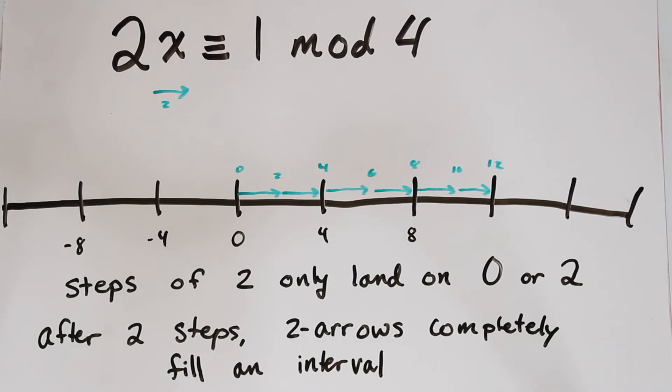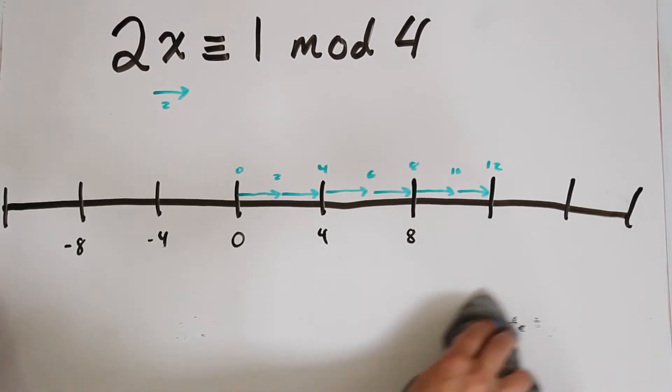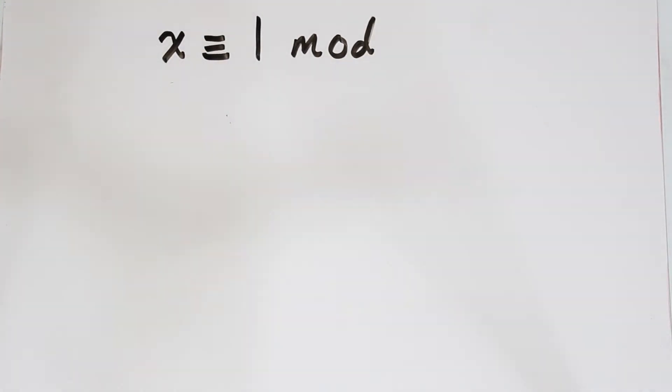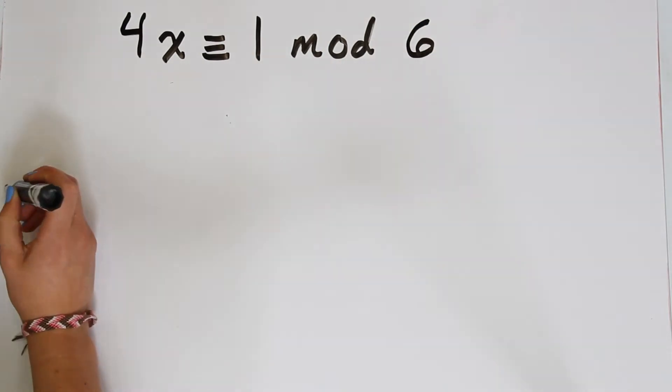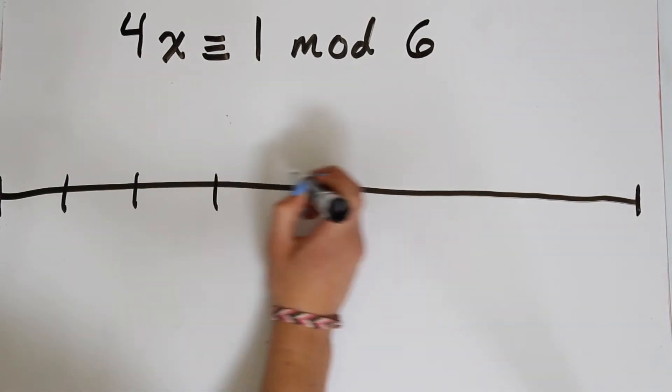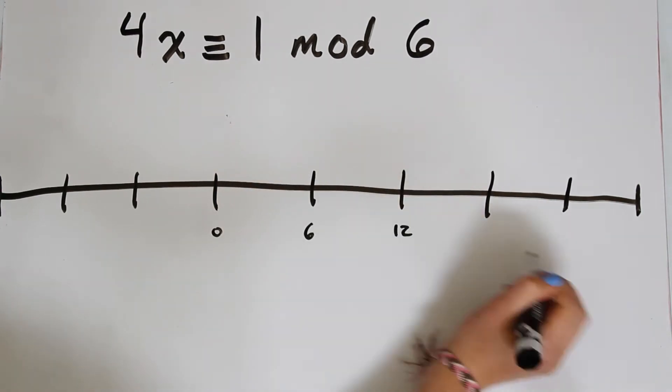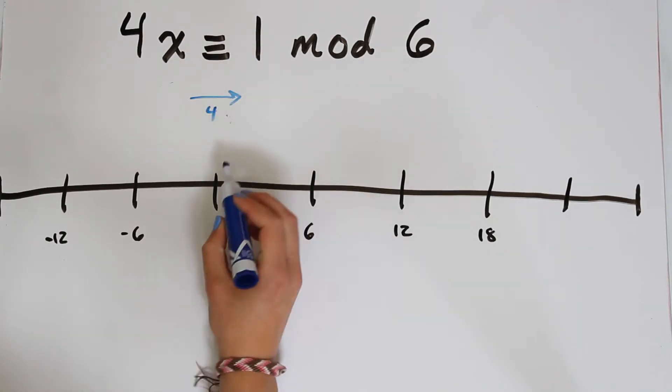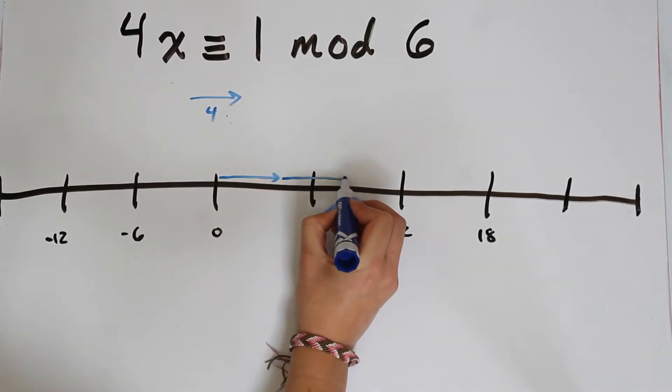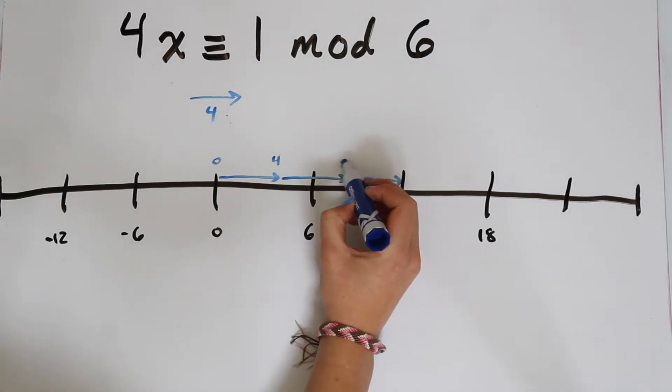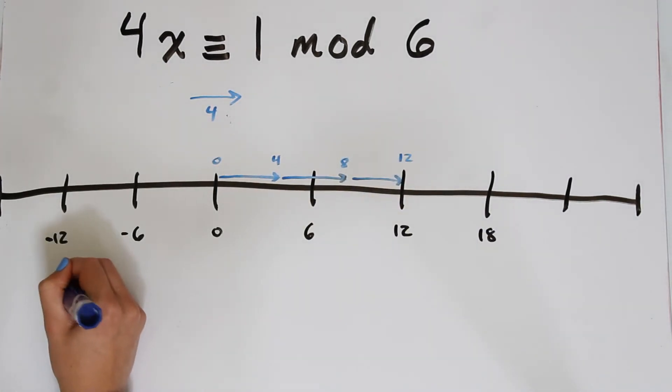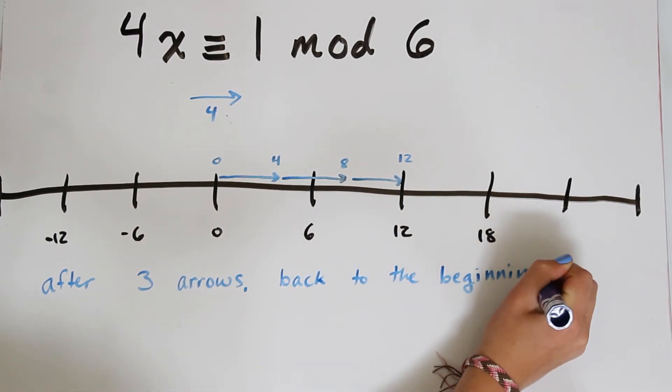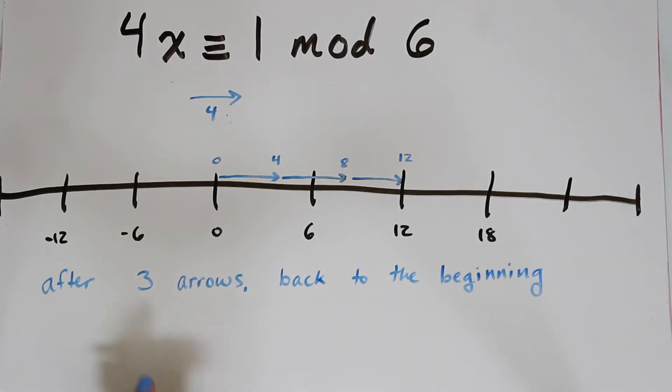Let's look at some more examples to understand why this is. So let's look at 4x is congruent to 1 mod 6. Here we have our number lines split into intervals of length 6. And then we have our 4 arrow. And we see by stacking these 4 arrows on top of each other that after 3 we've gone back to the beginning. So we've gone back to 0 mod 6. So therefore our 4 arrows can only ever land on 4, 2, or 0 in modulus 6.